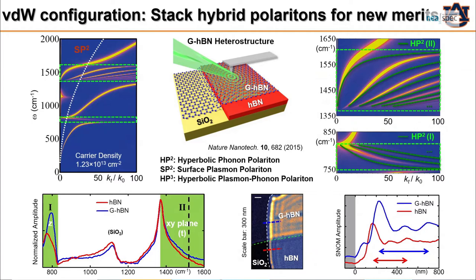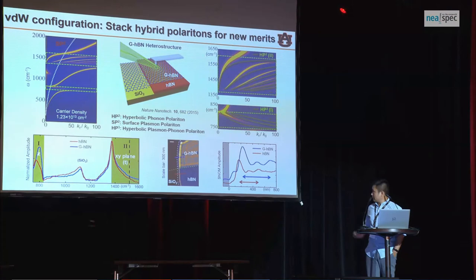Our first example: we know that graphene supports surface plasmon polaritons, and hexagonal boron nitride supports phonon polaritons, which tend to have a longer lifetime. However, phonon polaritons are based on lattice vibrations and are usually very rigid, so it is very hard to tune them. But if you combine graphene and boron nitride together, you actually get these combined hybrid polaritons.